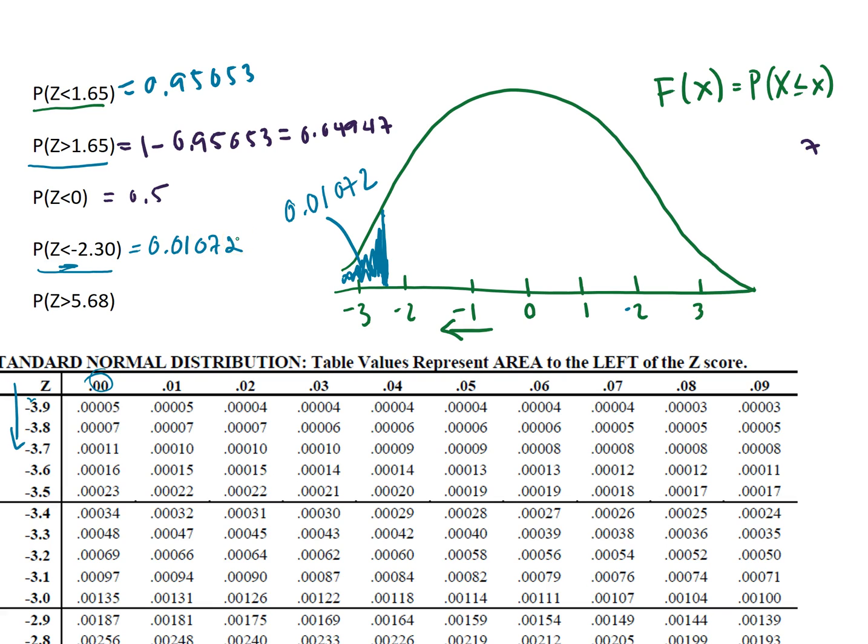And lastly the last example that we'll do, let's go ahead and get rid of this, is what is the probability z is greater than 5.68. So for z to be greater than 5.68 that means that, let's go ahead and draw a couple more distributions out here, it's going to be right out here, so 5.68. Now remember that the normal distributions have a span of negative infinity to positive infinity. So these tails keep going out forever.